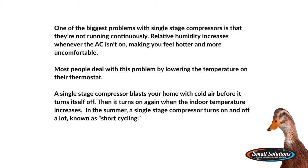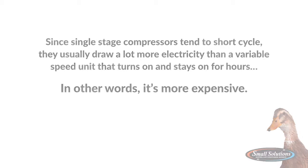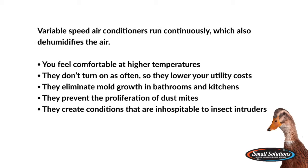Basically, a single stage compressor tends to short cycle and actually draws a lot more electricity than a variable speed unit. That means single stage air conditioners don't dehumidify your indoors very well and they jack up the cost of your utility bill. A two stage compressor is a little bit more efficient, but still not as efficient as a variable speed air conditioner. A variable speed runs continuously but more effectively, dehumidifies your home, and as a result you don't have to lower your thermostat as much — so your utility bills are actually going to be lower.